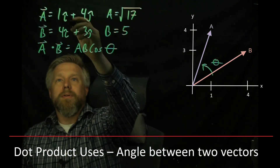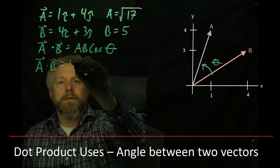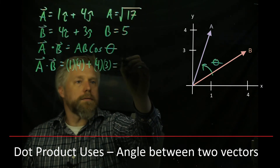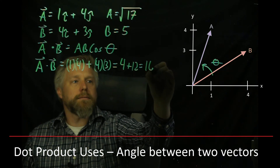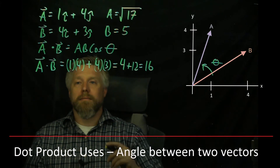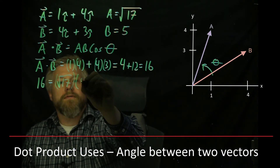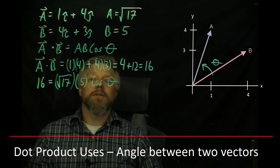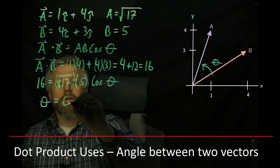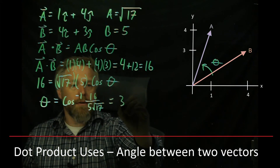To perform the dot product, we multiply like coordinates together: A dotted with B equals 1 times 4 (the x components) plus 4 times 3 (the y components), which gives us 4 plus 12 equals 16. So A·B = 16, which means 16 equals the square root of 17 times 5 times cosine theta. Solving for theta gives us the inverse cosine of 16 over 5 root 17, which equals 39.1 degrees.